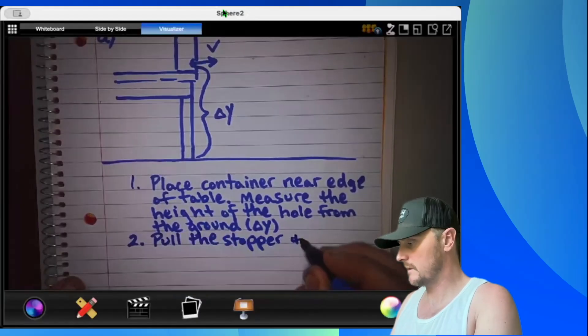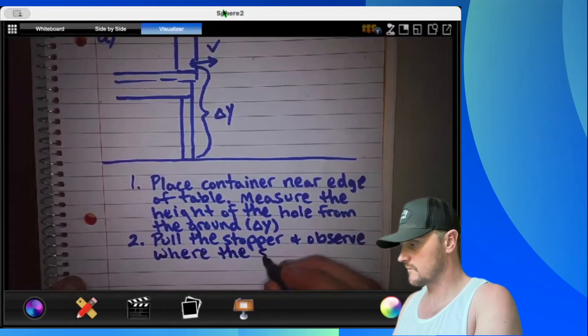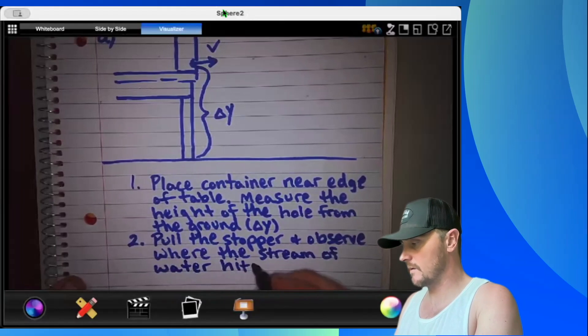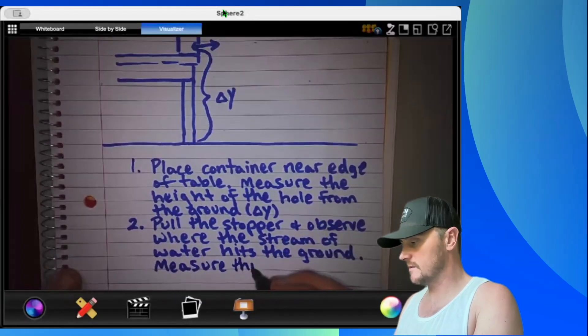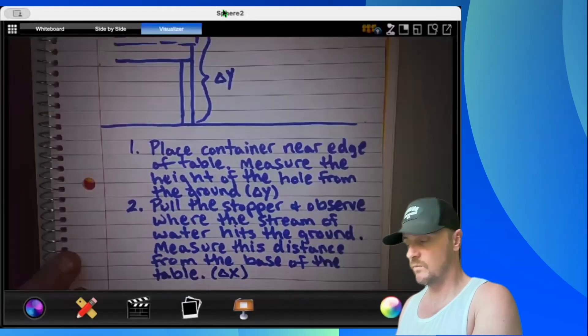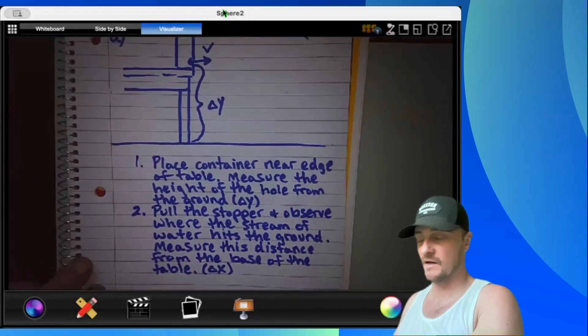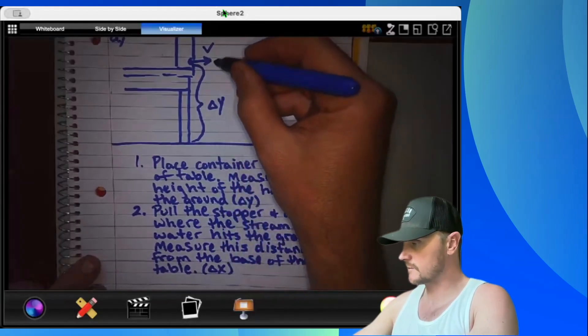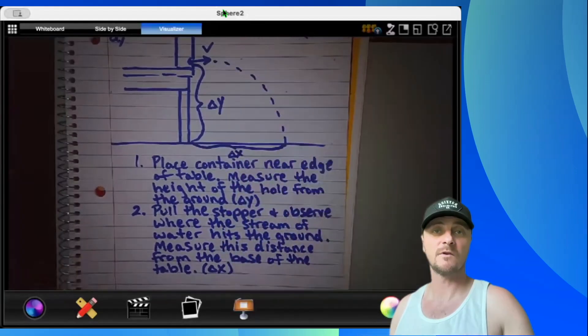Step 2: Pull the stopper and observe where the stream of water hits the ground. Measure this distance from the base of the table, and we'll call that delta X. In fact, I do recommend you drawing a picture that goes with this description so that the reader can see what you're talking about.